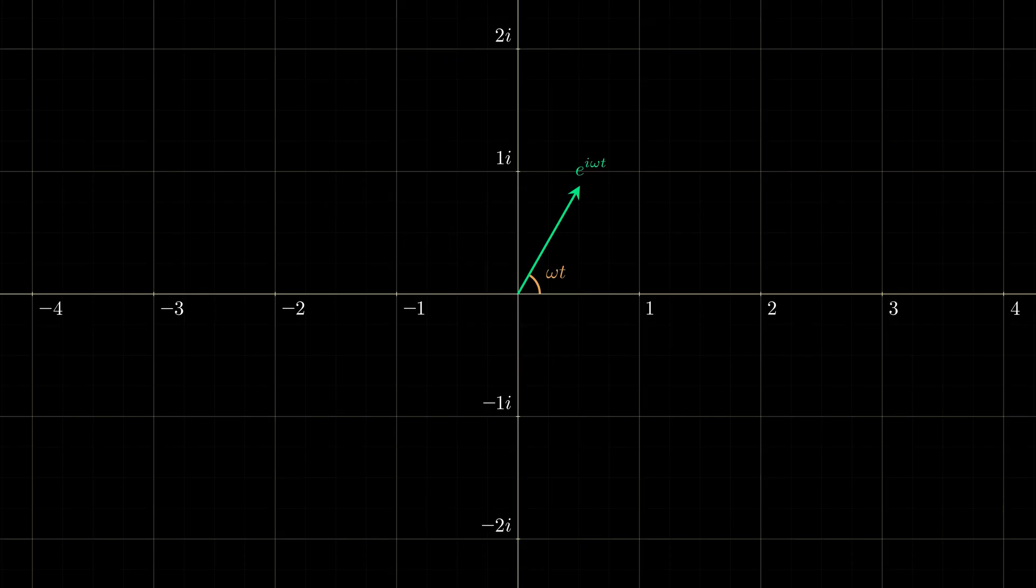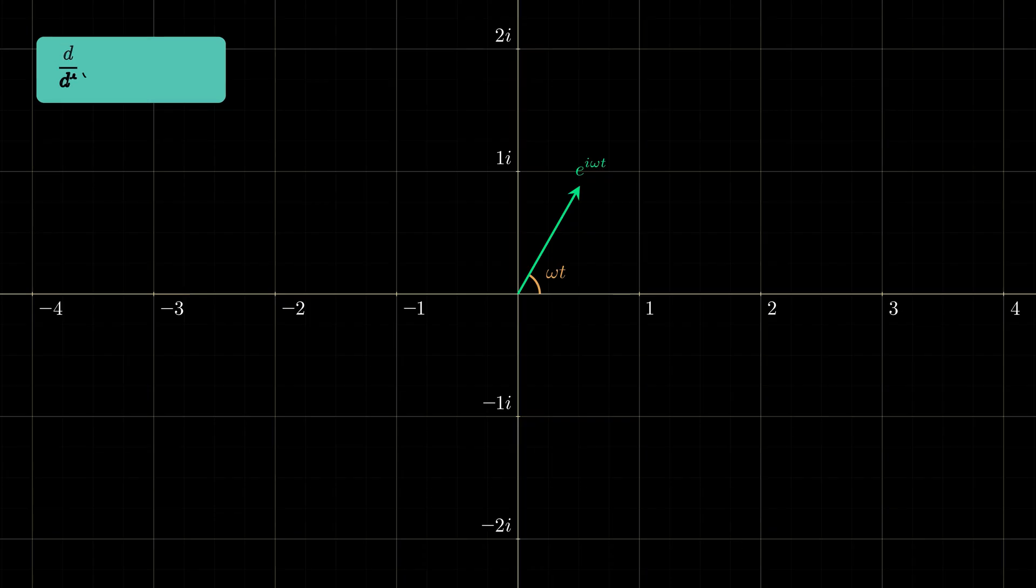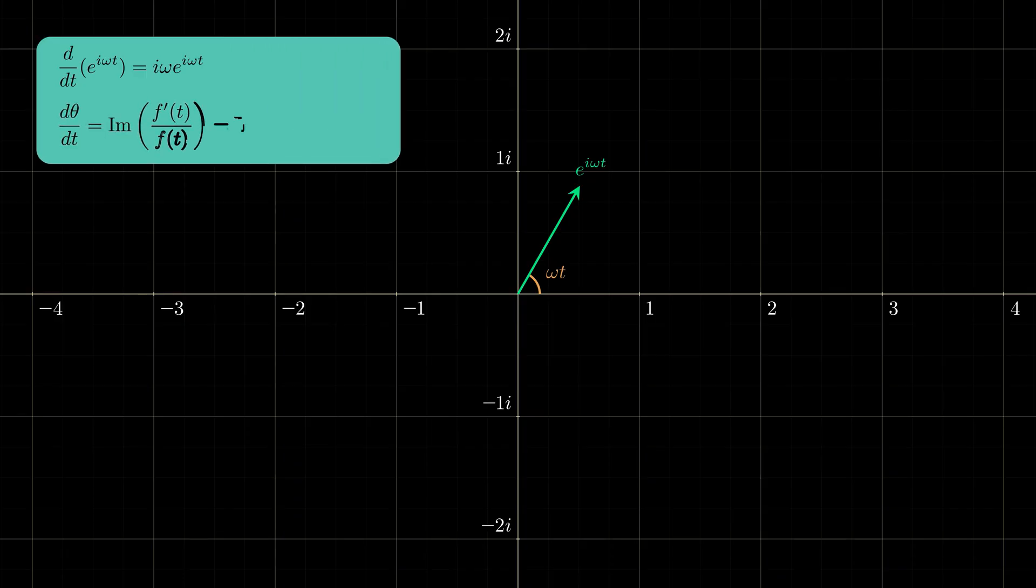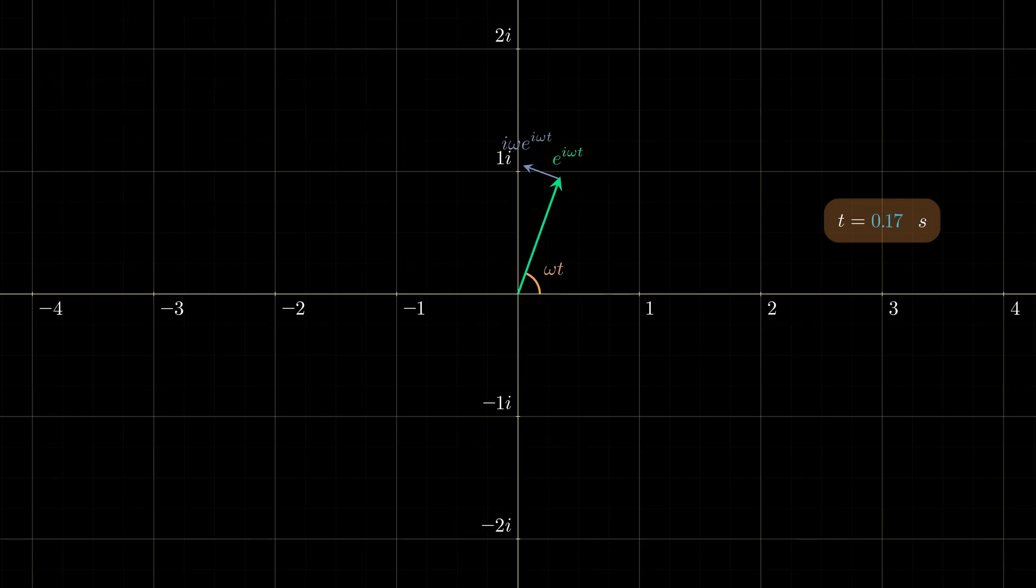If we want to know how this complex number behaves with time, we should calculate its derivative. We can see that it's the same complex number multiplied by i omega. Now multiplication by i in a complex plane corresponds to a rotation by 90 degrees. This means that at any instant, the derivative of exponential i omega t will be perpendicular to the vector itself. And by pulling the vector perpendicularly, we get a circular motion at constant angular speed omega.